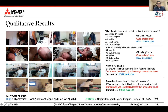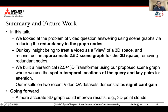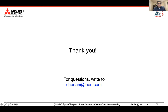This slide shows several qualitative results from the two datasets, with more results provided in the supplementary materials. To summarize, we looked at video question answering using scene graphs, reducing redundancy in graph nodes by treating a video as a view of a 3D space and reconstructing an approximate 2.5D scene graph, thus removing redundant nodes. We built a hierarchical 2.5+1D transformer using spatiotemporal locations of query-key pairs for attention, demonstrating significant gains on two video QA datasets. Going forward, a more accurate 3D graph — for example using 3D point clouds — could improve our results. Thank you for listening and I look forward to meeting you at the poster session.